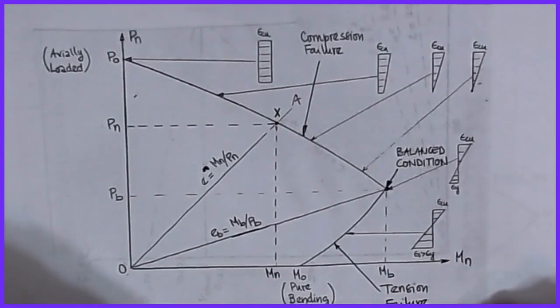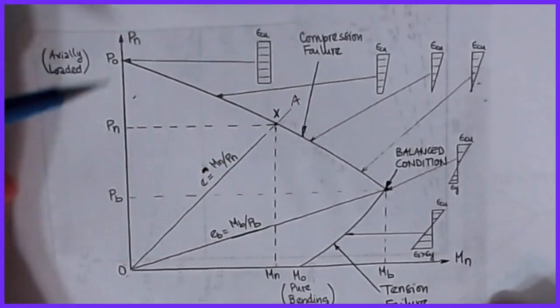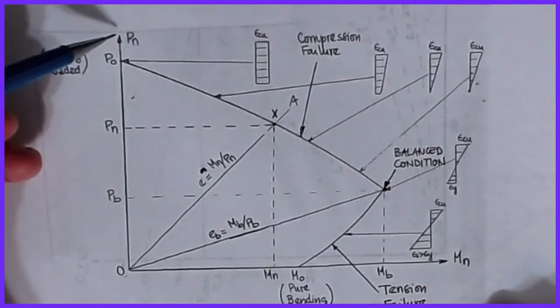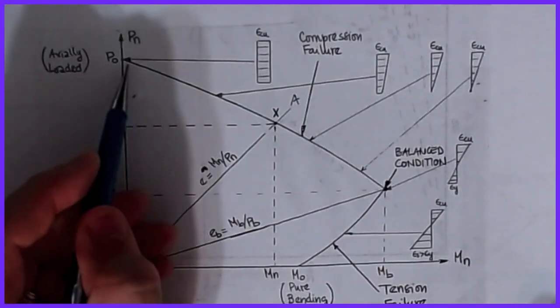What we've plotted here is I have my axial load on this axis and then my nominal moment on this axis, and my capacity curve identifies those five points.